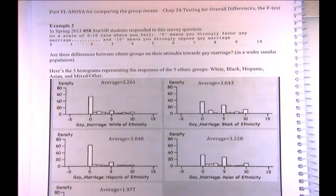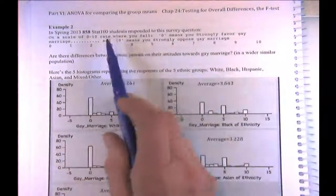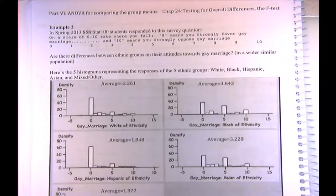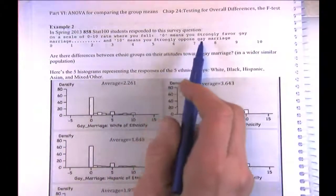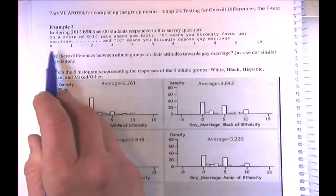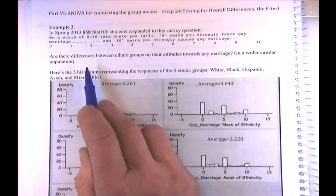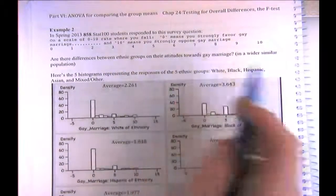In the spring of 2013, 858 STAT 100 students responded to a survey question about their attitudes towards gay marriage on a scale of 0 to 10, where 0 means you strongly favor gay marriage and 10 means you strongly oppose it. The question is: are there differences between ethnic groups in their attitudes towards gay marriage?